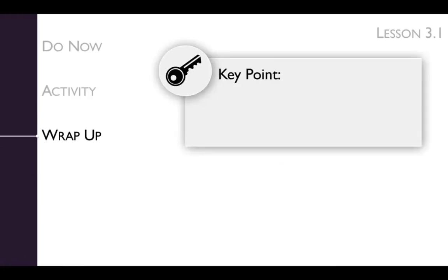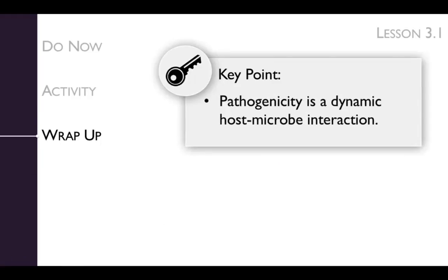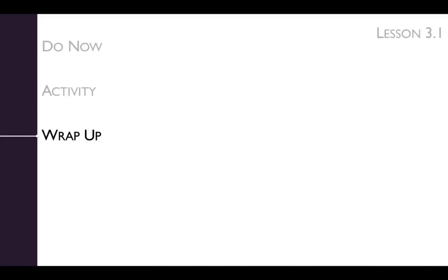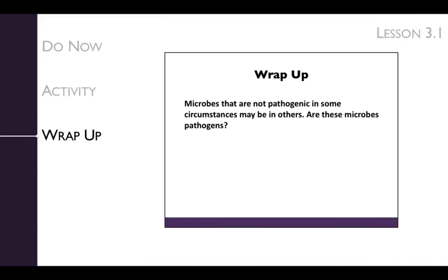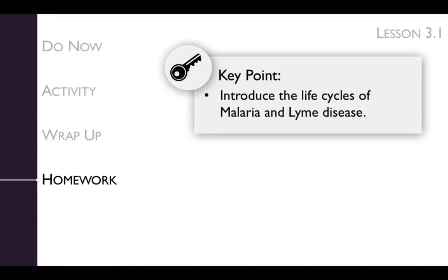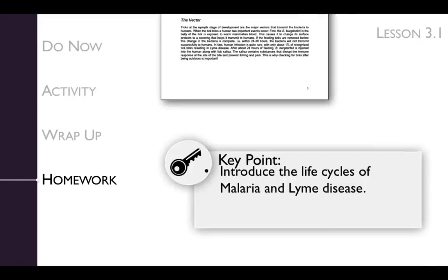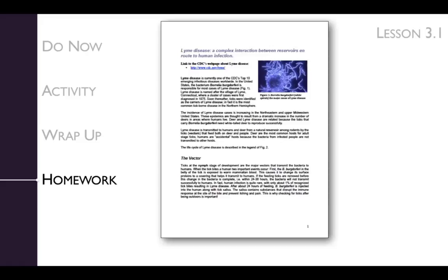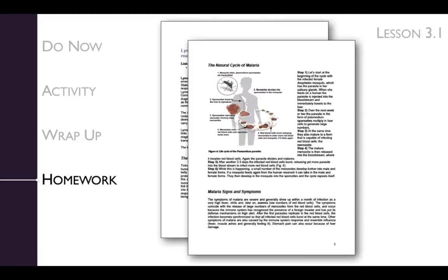The key point of the lesson's wrap-up is that pathogenicity is a dynamic host-microbe interaction. We'll get there by considering the following question in small groups: microbes that are not pathogenic in some circumstances may be in others — are these microbes pathogens? The key point of the lesson's homework is to introduce the life cycles of malaria and Lyme disease, by having students read the Jigsaw reading on Lyme disease and malaria.